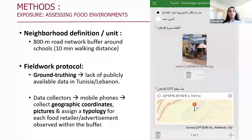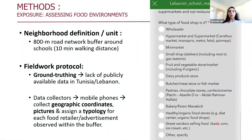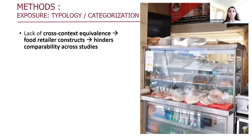This is a screenshot of the application, where data collectors could take pictures and capture geographic information. This is also a screenshot of the checklist used by data collectors to assign typology. We had one checklist for Lebanon and one for Tunisia. Regarding typology, it was quite challenging to categorize the different food retailers because of the lack of cross-context equivalence in food retailer constructs.